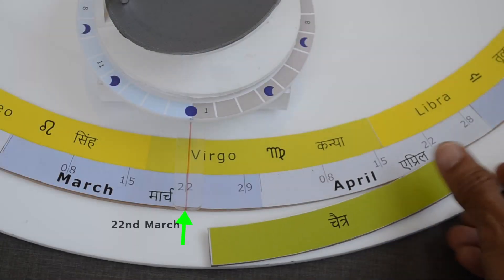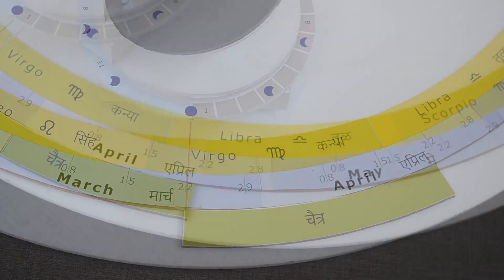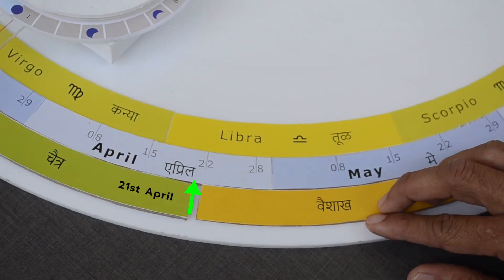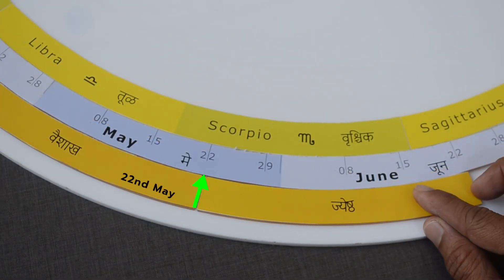Chaitra, first month of the year starts on 22nd March. Vaishak starts on 21st April. Jeshta, 22nd May.